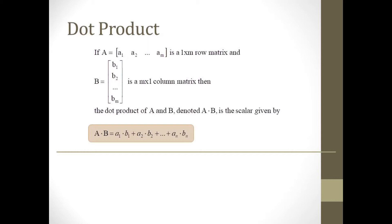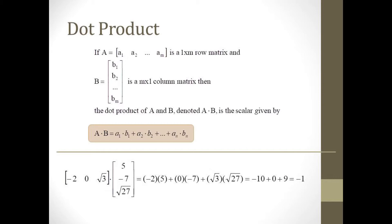The final operation for this video is matrix multiplication. Matrix multiplication is significantly less intuitive than our first two operations. We start by defining the dot product of a 1 by m row matrix A with an m by 1 column matrix B. This requires multiplying the ith element of A times the ith element of B and adding up the m different products. The result of the dot product is a single scalar. For example, A is the row matrix negative 1, 0, square root of 3, and B is the column matrix 5, negative 7, square root of 27. The value of A dot B is negative 1 times 5 plus 0 times negative 7 plus square root of 3 times square root of 27, giving us negative 10 plus 0 plus 9, which equals negative 1.